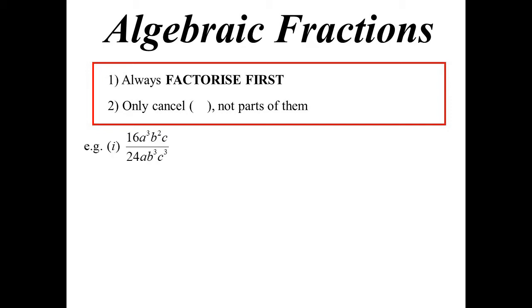So I'll start off with a very simple one. Of course, there's no factorizing to be done on this one, which is just how do we cancel? Well, obviously, the 16 on 24 becomes 2 thirds. The b squared and the b cubed, the a into the a cubed, and the c into the c squared. So they were the first sort of cancelling ones.